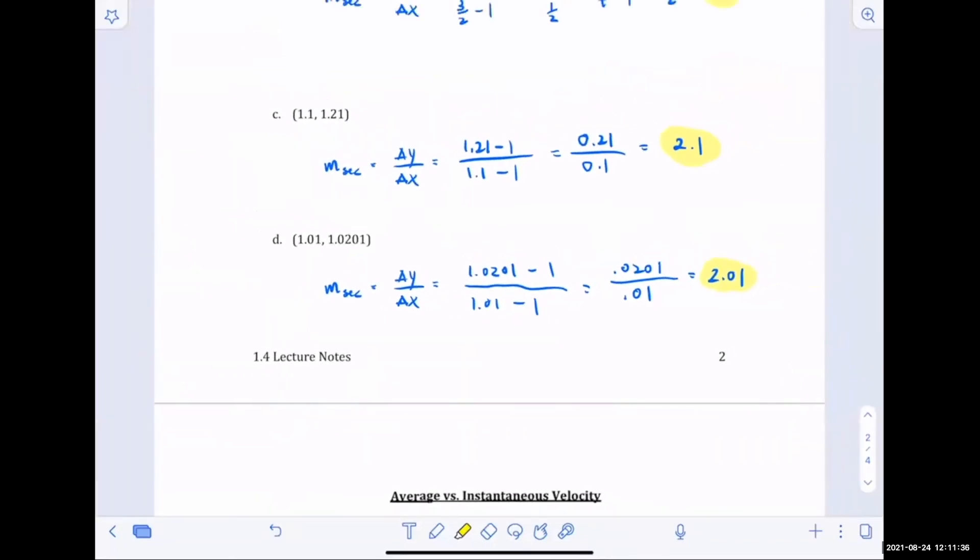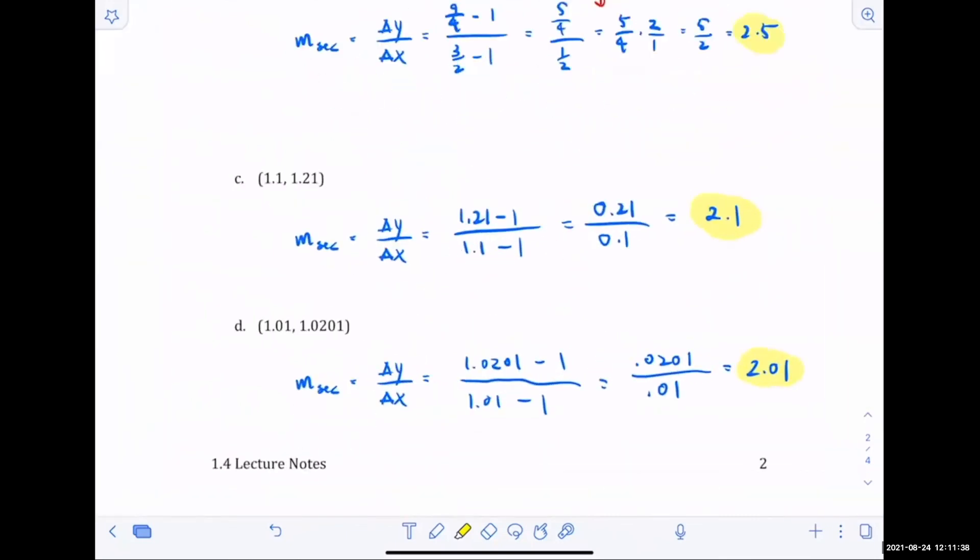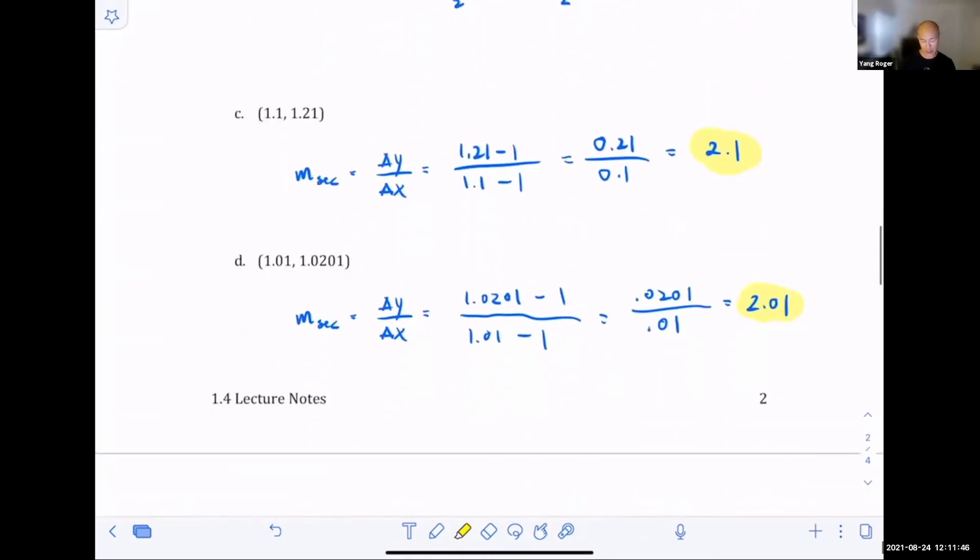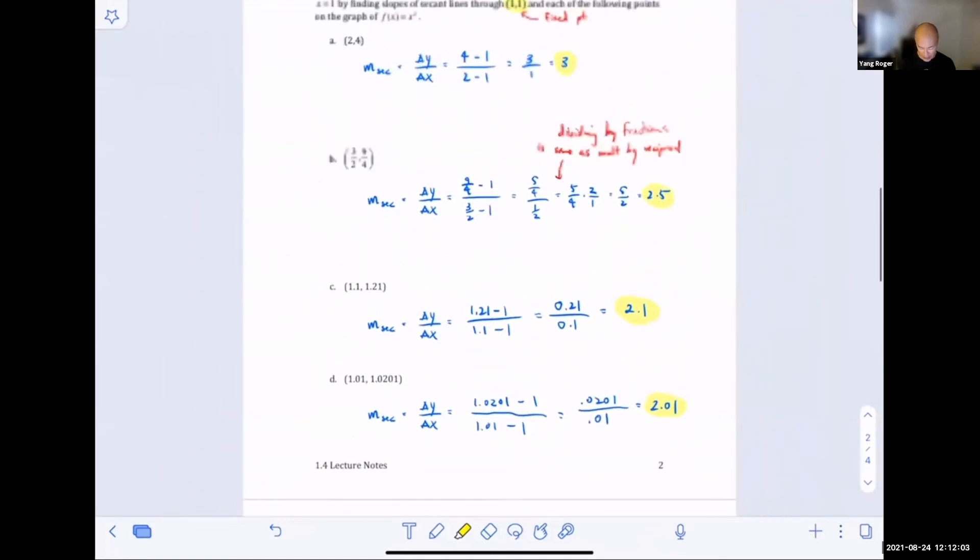Do we have to leave it as a decimal? Or can we also leave it as a fraction? That's a good question. To be honest, in math we usually prefer fractions. Or at least in calculus, I would say. But for this particular example, I'm trying to make a point. And it's easier for me to make my point if we write it as a decimal.